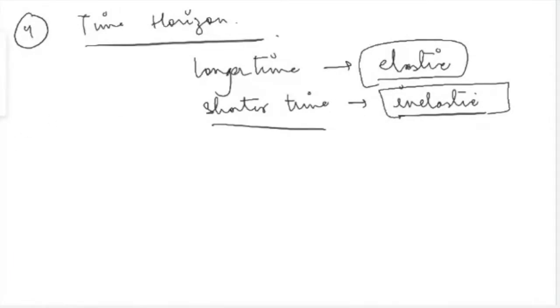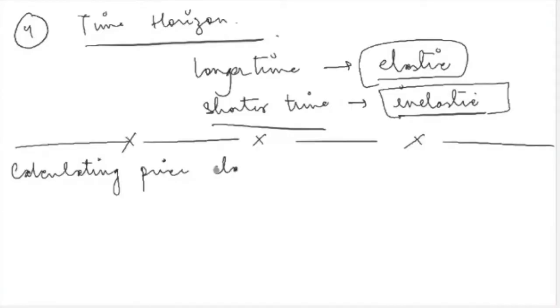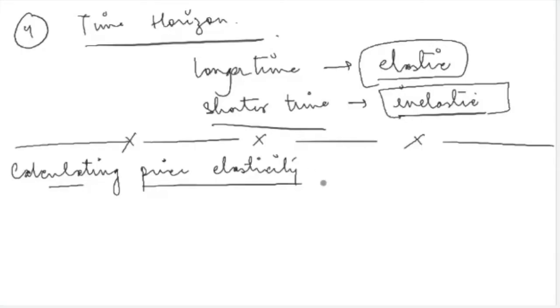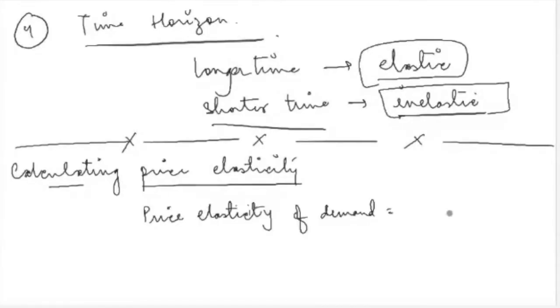Today we are going to talk about how we can calculate the price elasticity of demand and what we can conclude about the elasticity of different demand curves. We have already stated the meaning of price elasticity of demand — it tells you the percentage change in quantity demanded for a given percentage change in prices. So price elasticity of demand equals percentage change in quantity demanded divided by percentage change in prices.